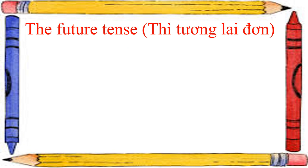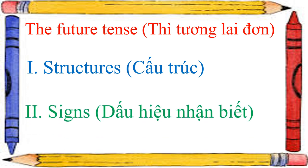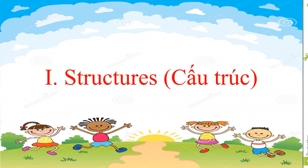The future tense is used to predict events that may happen in the future, or to give advice, instructions, or suggestions. Today the lesson includes two parts: number one, the structures, and number two, the signs. Let's start with the first part — structures.